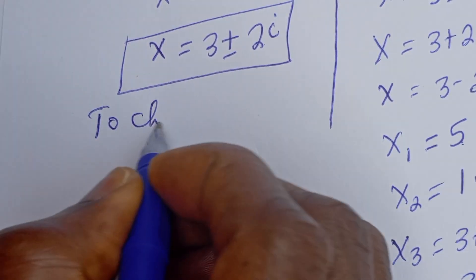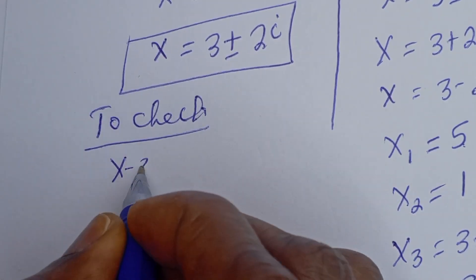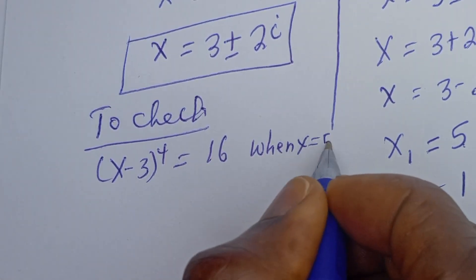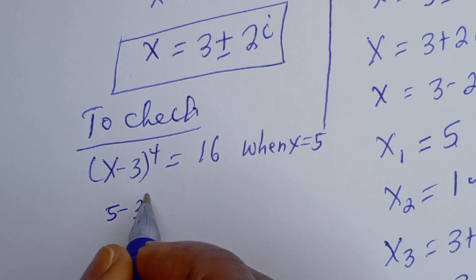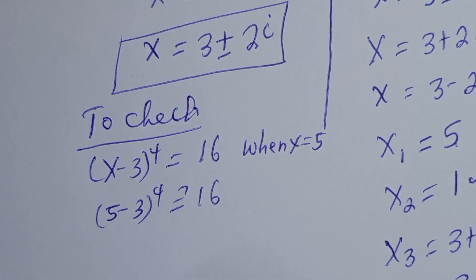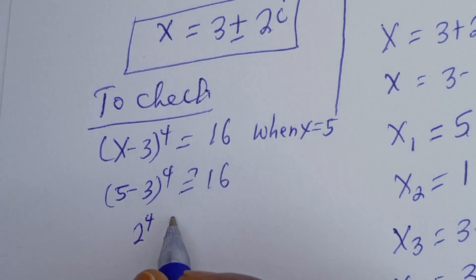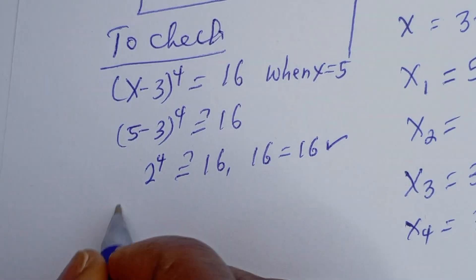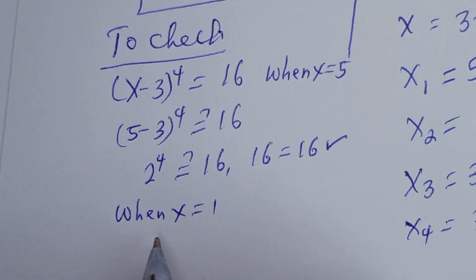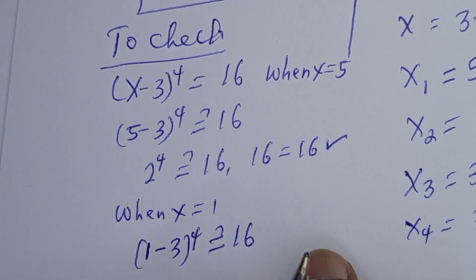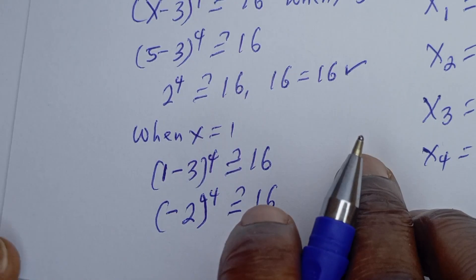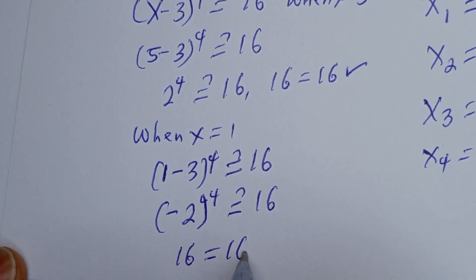To check, we use the original equation S minus 3 to the power of 4 equals 16. When S equals 5: 5 minus 3 to the power of 4 is 2 to the power of 4, which is 16. That is true. When S equals 1: 1 minus 3 to the power of 4 is negative 2 to the power of 4, which is also 16. That is also true.